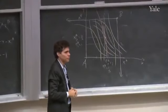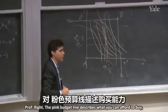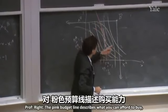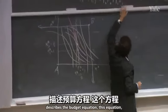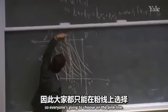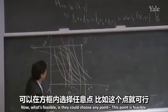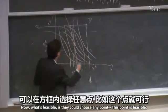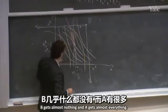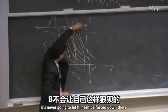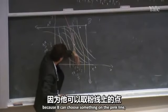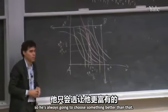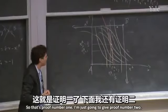A student asks about whether the point must be on the pink budget line. The pink budget line describes what you can afford — the budget equation. Everyone will choose on the pink line. Feasible points anywhere in the box exist — B could get almost nothing and A almost everything — but B would never be forced there because B can always choose something on the pink line that's better.